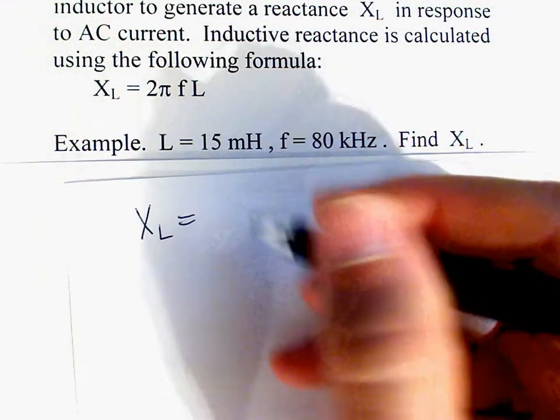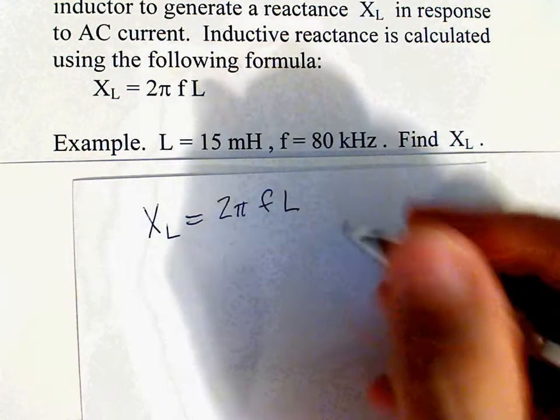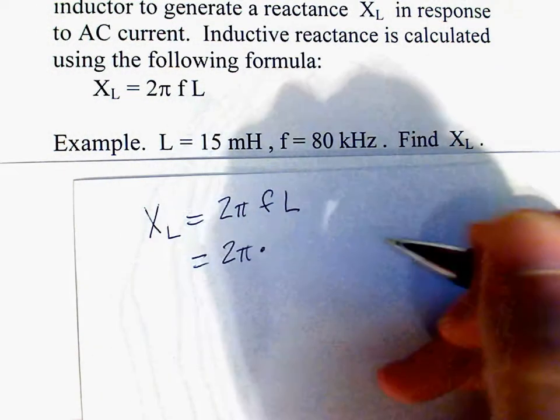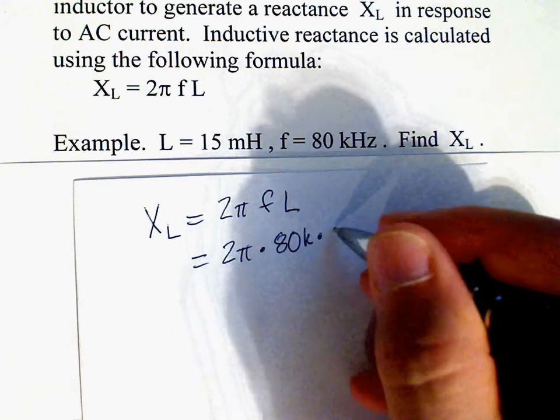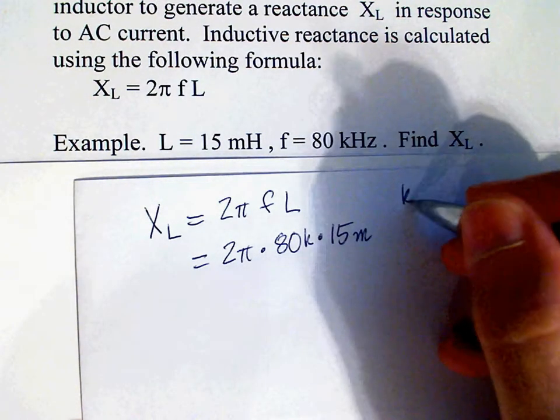And so we have XL is equal to 2 pi FL. So in this case, we have 2 pi times 80 K times 15 milli.